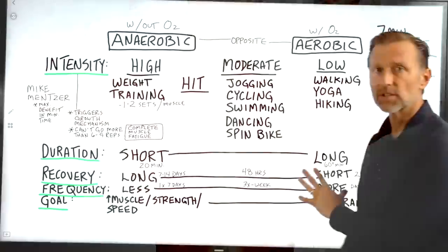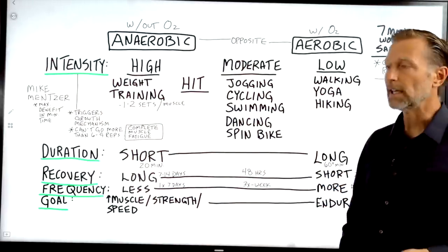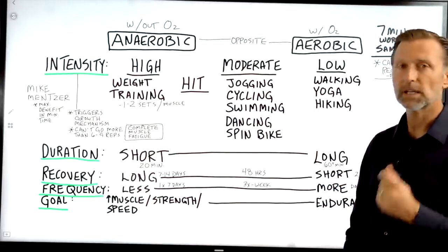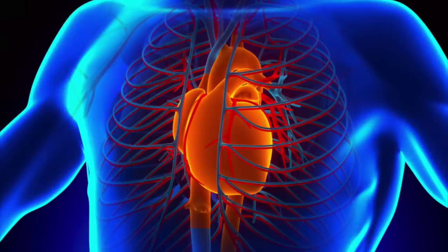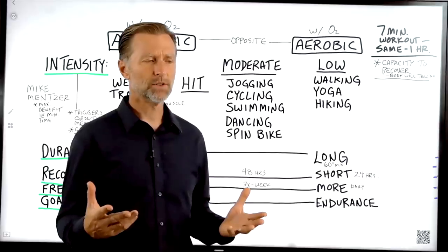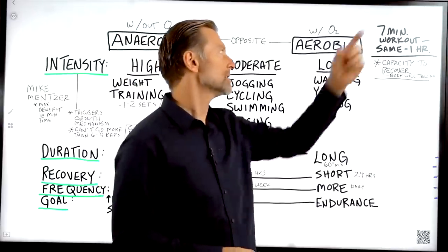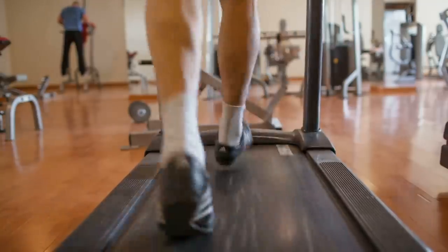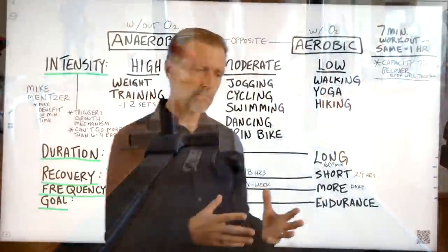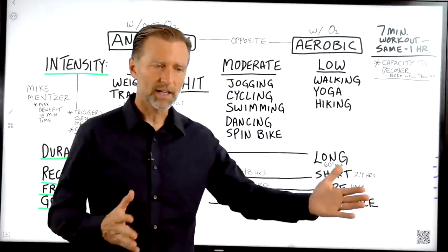Having endurance is really important too, because you don't want to be walking up a hill and immediately get out of breath. You want that endurance for cardiovascular health, longevity, etc. Sometimes you'll hear the concept that if you do a high intensity interval training workout for seven minutes, you'll get the same benefits as an hour of walking on the treadmill. Well, the question is, what benefits are you looking at? Because the benefits from either one are different.